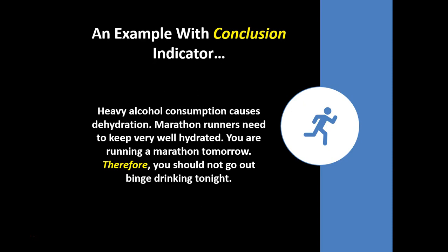Here's an example of an argument with a conclusion indicator. Heavy alcohol consumption causes dehydration. Marathon runners need to keep very well hydrated. You're running a marathon tomorrow. Therefore, you should not go out binge drinking tonight. Here, 'therefore' is highlighted — it's a conclusion indicator, letting you know: here's the conclusion. You should not go out binge drinking tonight, and the rest of the argument is meant to support that conclusion.